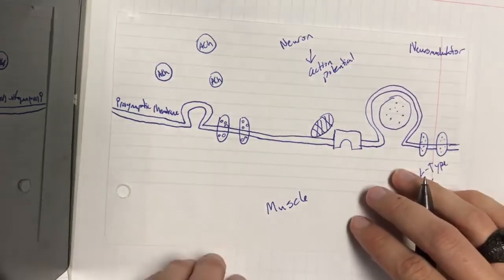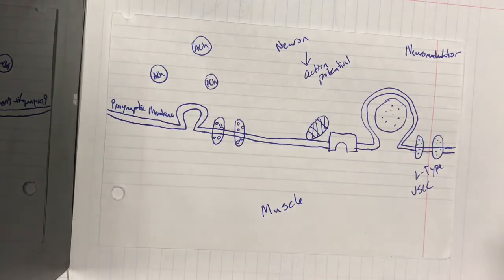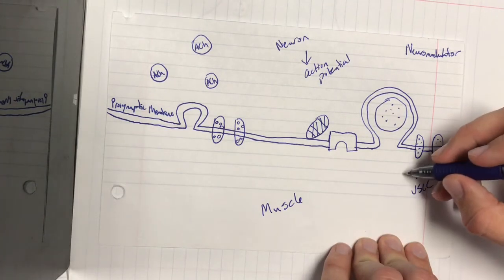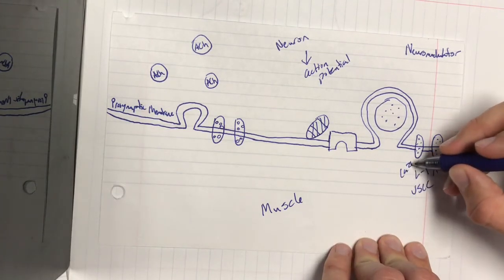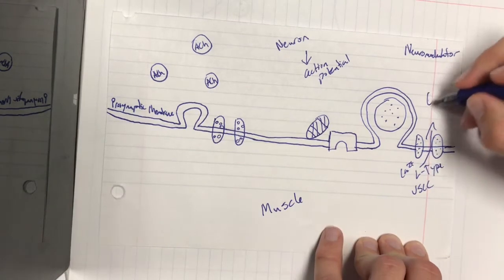the depolarization during that action potential causes calcium ions to flow in to the neuron.